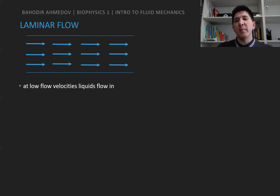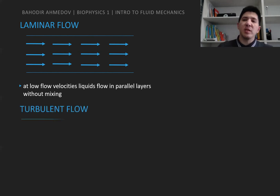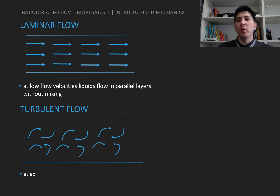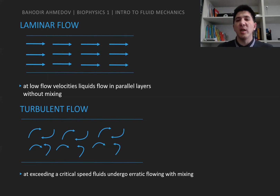Laminar flow usually happens at low velocities. At the same time, there is another type of flow called turbulent flow, where the streamlines interact with each other and mix up, and this usually happens at higher velocities.